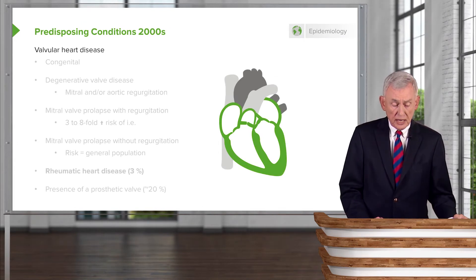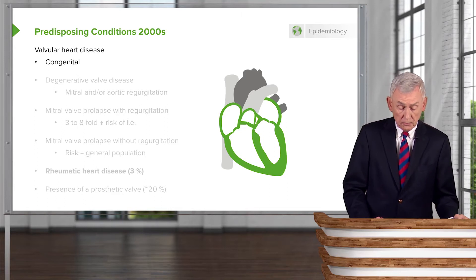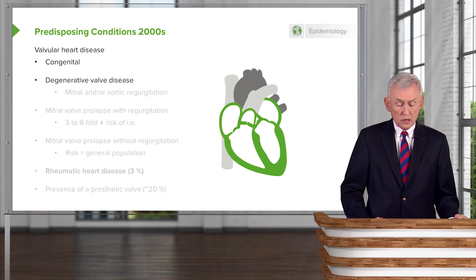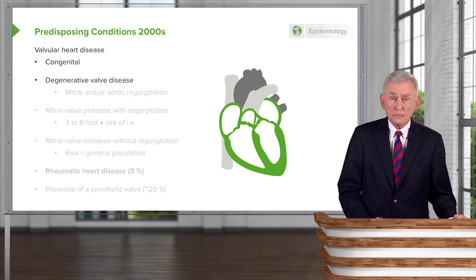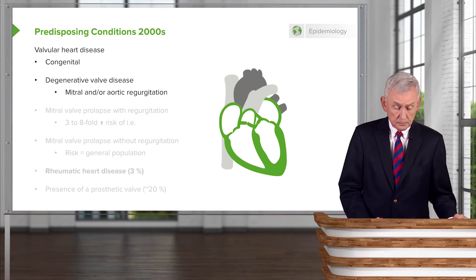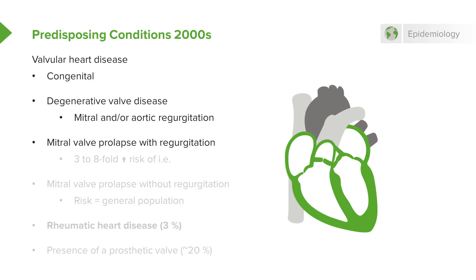The predisposing conditions in the 2000s still include valvular heart disease and congenital heart disease, but instead of rheumatic heart disease, we're talking about degenerative valve disease. People are living longer — long enough for their mitral and aortic valves to degenerate. Mitral valve prolapse with regurgitation carries a three to eight-fold increased risk of endocarditis, making it one of the leading cardiac predisposing conditions.